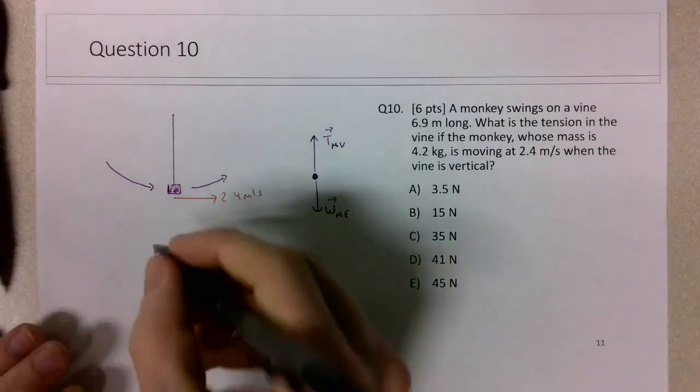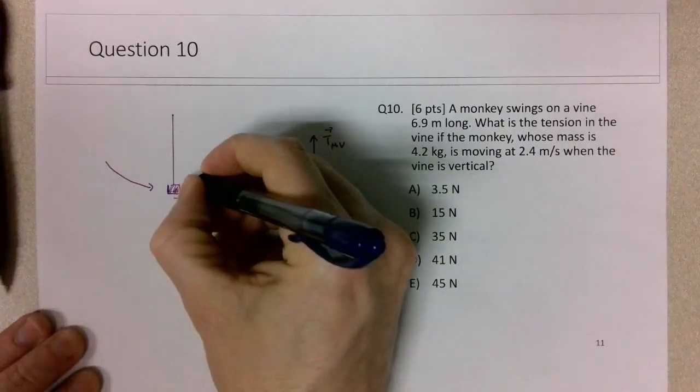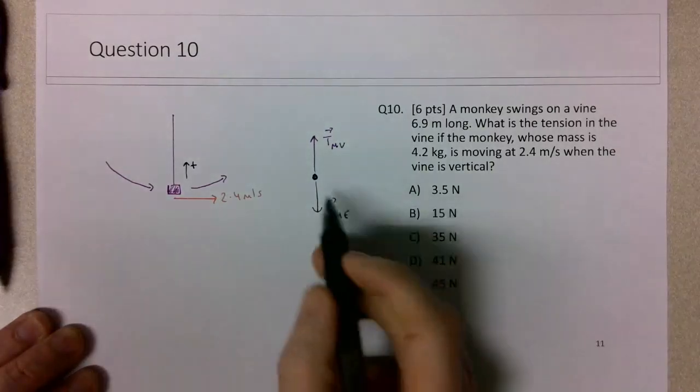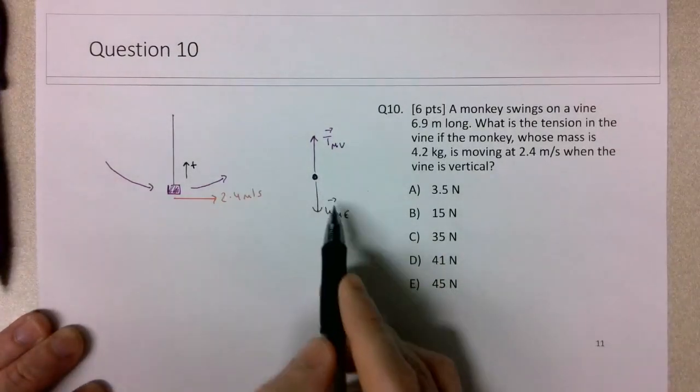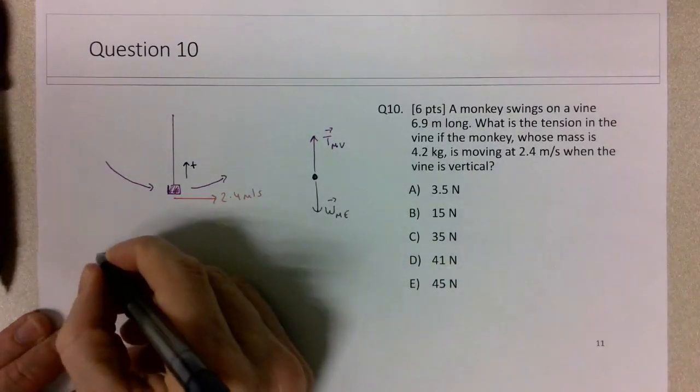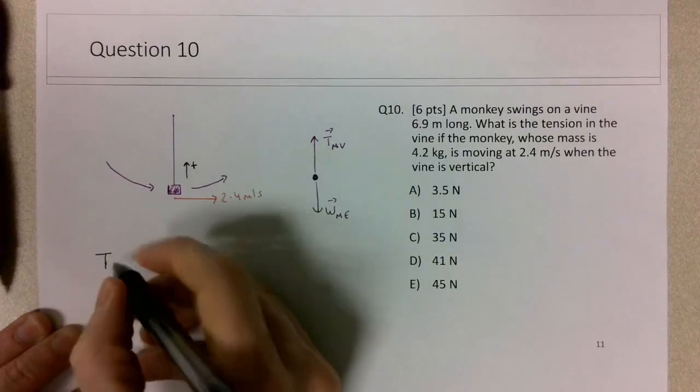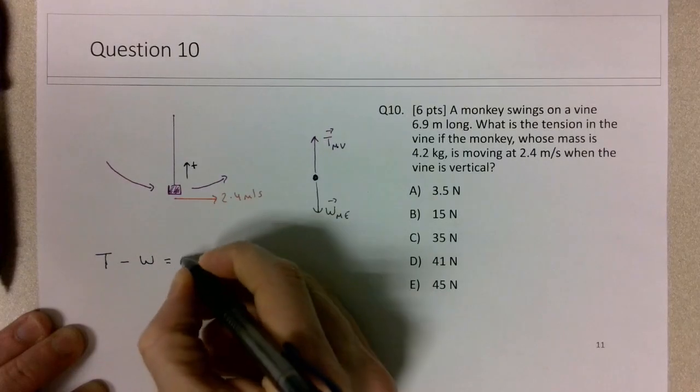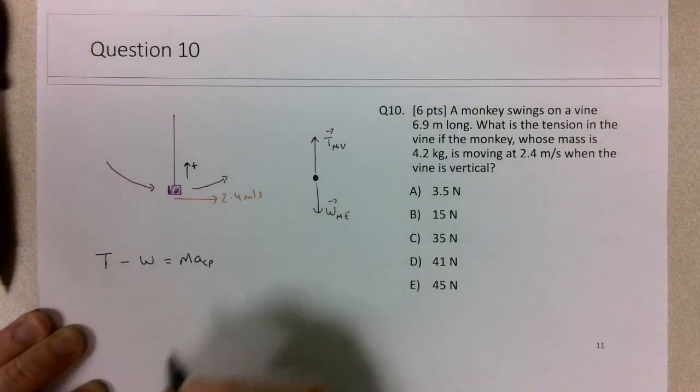So if we assume in this situation, I would call the upper direction positive, and that would be the direction of the acceleration. So I'll make this force positive and this force negative. So the tension, which is what we're trying to find here, minus the weight, will be equal to the mass times centripetal acceleration.